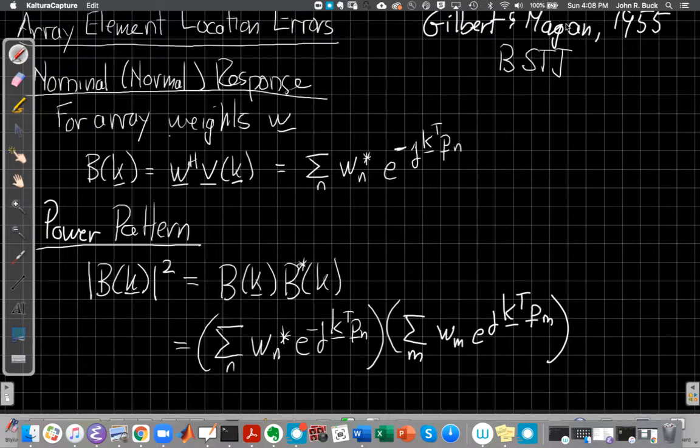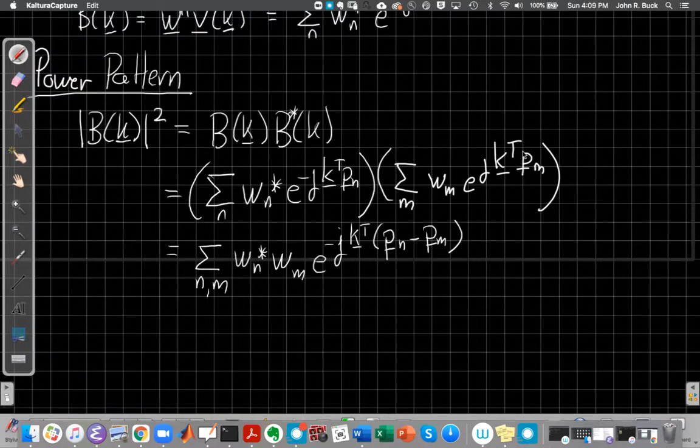So I'll have n squared terms in the sum before I'm done. If I put that all together, I'm going to pause the video to save time while I write it out. So I'm taking the sum over all n and all m. One is conjugated, one isn't. E to the minus j. And I've combined these two exponentials and factored the K transpose out front, the wave number. So I have K transpose times P_n and P_m.